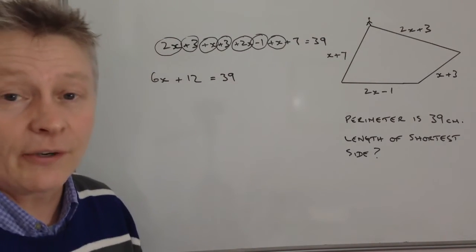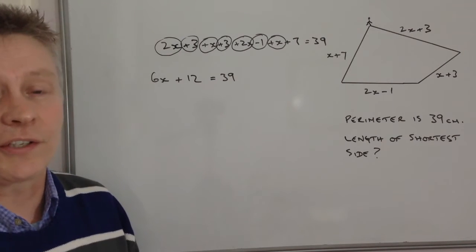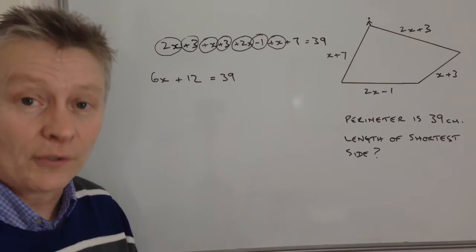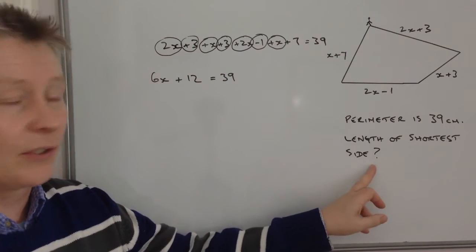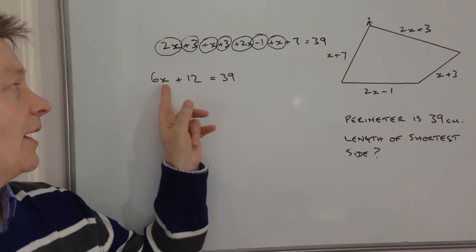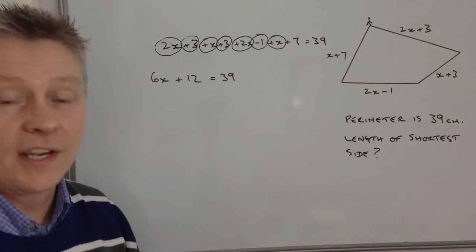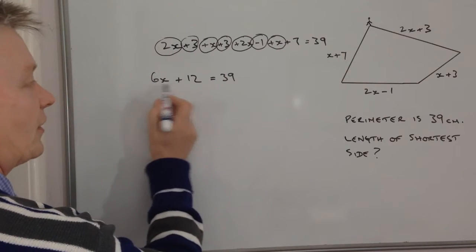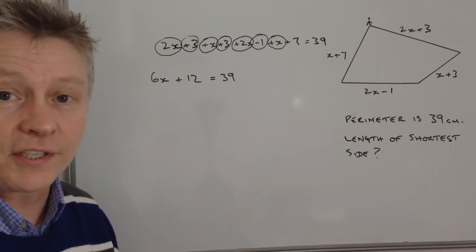And what we have here really now is just a linear equation that we need to work out the value of X. And when we do that, in order to find the length of the shortest side, we just plug that number, that value of X into each of these, and we find out which is the shortest side. So I've got 6X plus 12 equals 39.